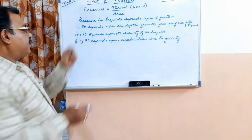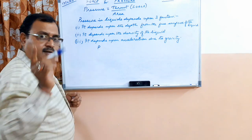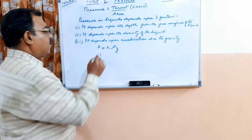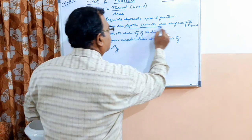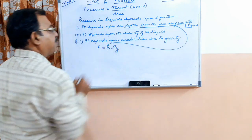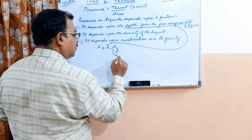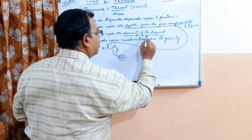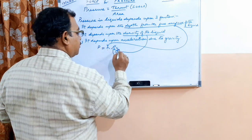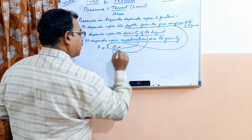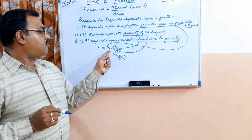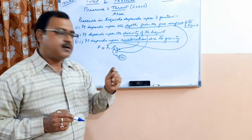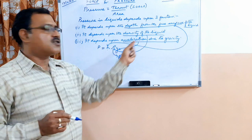Remember, pressure in liquids is given by the formula P equals H rho G, where H is the depth from the free surface of the liquid, rho is the density of the liquid, and G is the acceleration due to gravity of Earth.